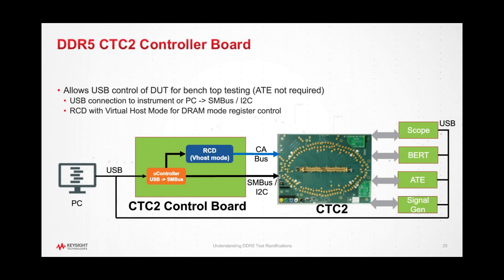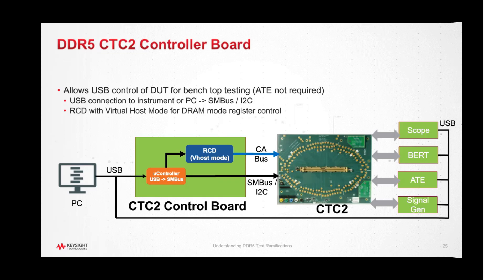If, for example, an ATE is not available, the controller board could be taking this task. The diagram also shows the different test components like oscilloscope, bit error rate tester, ATE, or signal generator, that may be used for testing the DUT receiver.